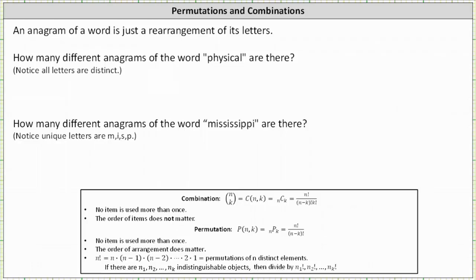An anagram of a word is just an arrangement of its letters. The first question is how many different anagrams of the word physical are there?